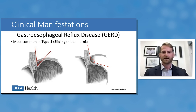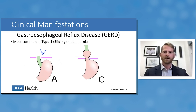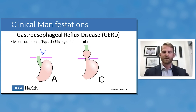GERD is most commonly encountered in type one or sliding hiatal hernias due to loss of the angle of His. The flap valve works well when the fundus is above the GEJ with an acute angle, but as the angle becomes obtuse there is loss of that reflux barrier. Additionally, the lower esophageal sphincter moves from the positive-pressure environment of the abdomen into the negative-pressure environment of the chest, where intermittent pressure pulls it open, rendering it less effective.